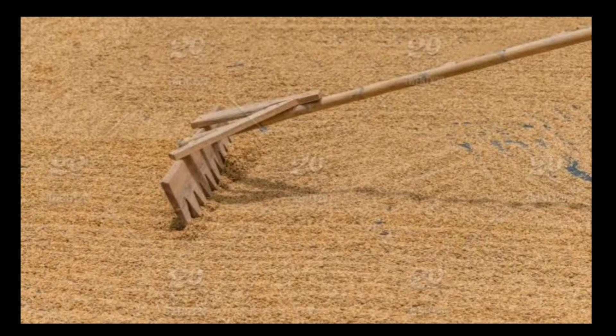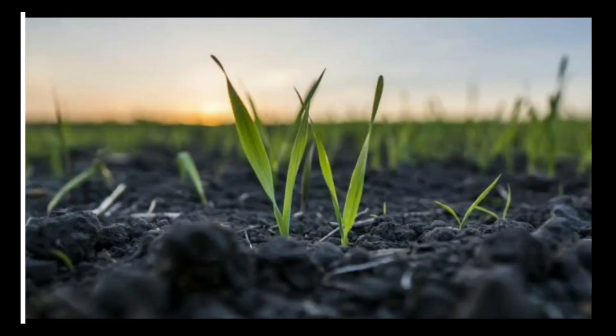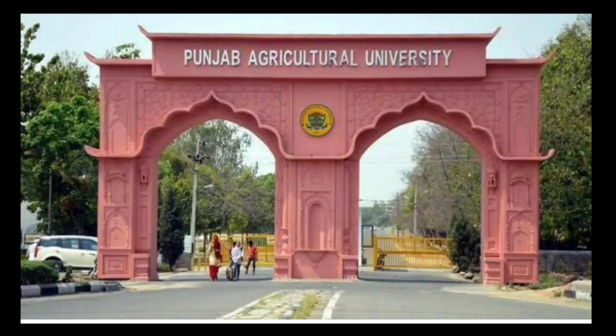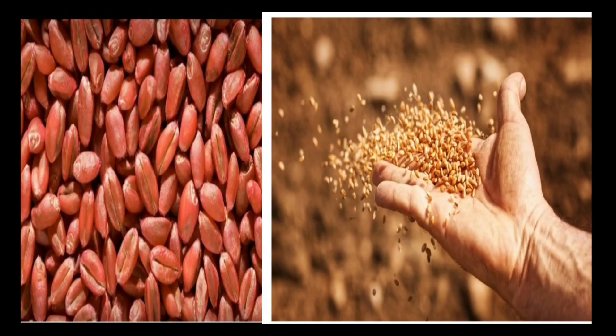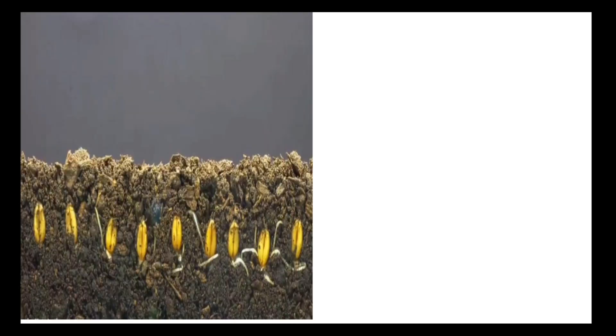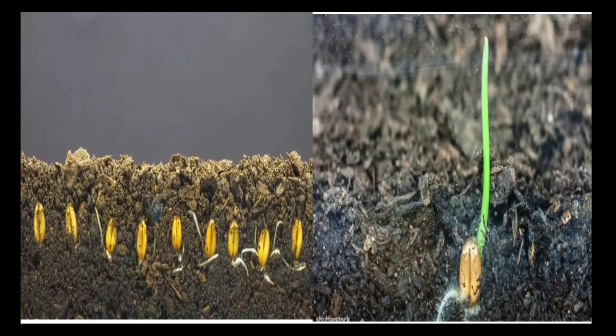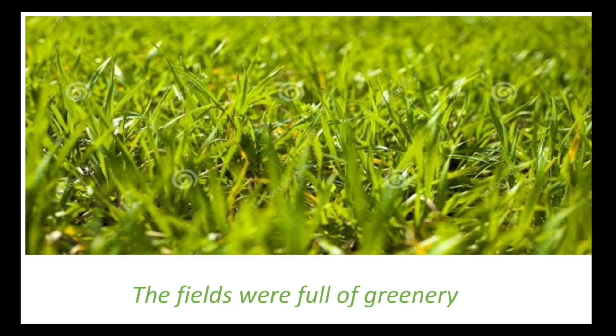Therefore, they will sow old seeds along with the new ones. On Saturday, uncle brought purified seeds from Punjab Agriculture University, Ludhiana. On Sunday, the fields were ploughed well and seeds were sown after applying a special chemical on them to save them from mold. After a few days, small plants grew in the field and the fields were full of greenery.